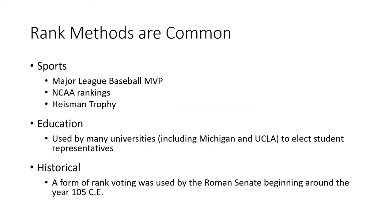Rank methods are pretty common. You'll see this kind of thing in sports — when there are votes for ranking teams in the NCAA, or choosing the MVP for Major League Baseball, the Heisman Trophy — a lot of times they use rank methods. Education uses these to elect student representatives sometimes, with examples at the University of Michigan and UCLA. There are also historical examples: a form of this rank voting was used by the Roman Senate beginning around the year 105.